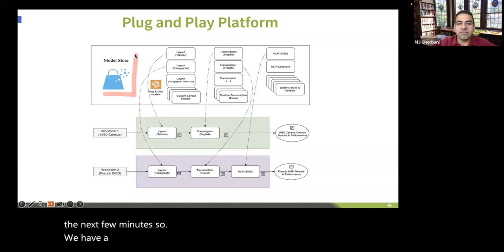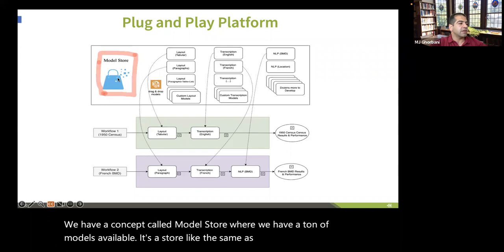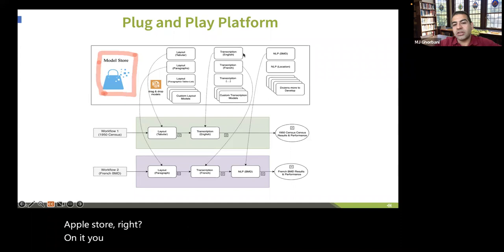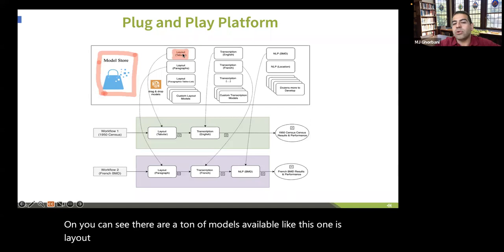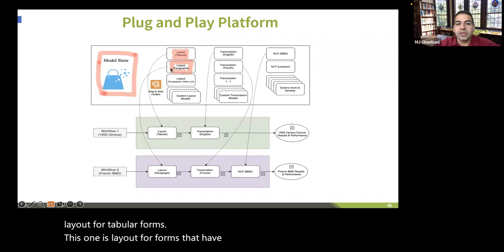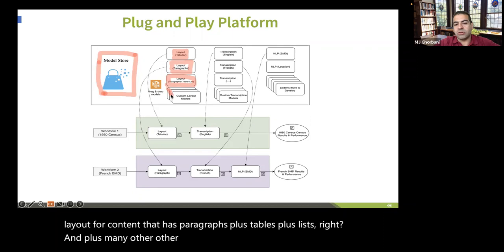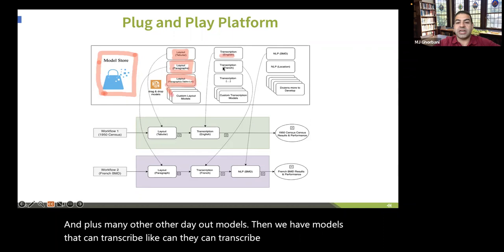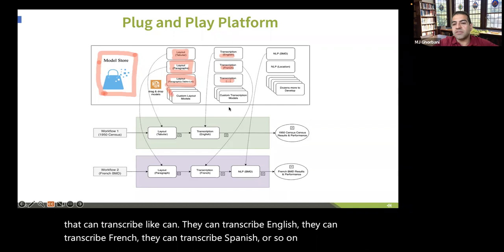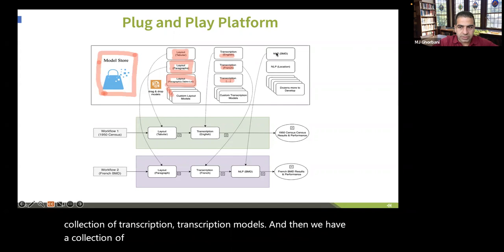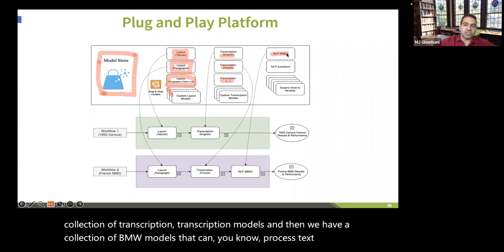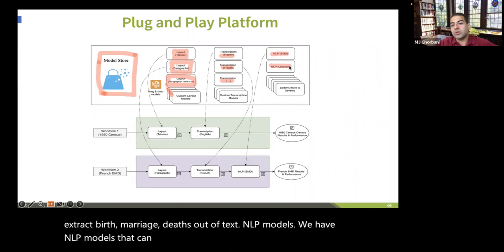We have a concept called a model store — like an iPhone app store — where you can see a ton of models available. For example: a layout model for tabular forms, a layout model for paragraph forms, a layout model for content with paragraphs plus tables plus lists. Then we have transcription models that can transcribe English, French, Spanish, and so on. And then we have NLP models — for example, BMD models that can extract births, marriages, and deaths from text, or NLP models that extract locations.